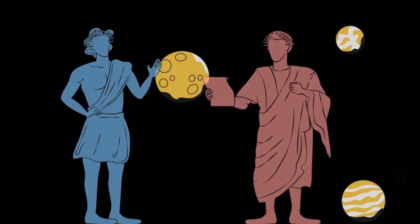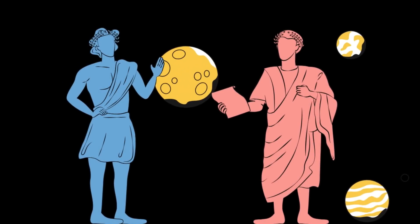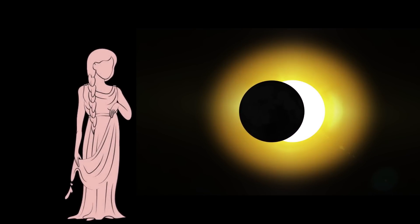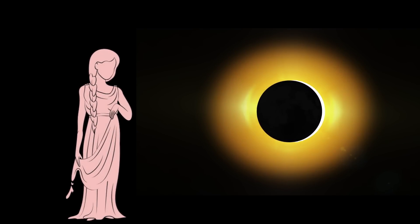Meanwhile, the Greeks began to question the myths surrounding the world. They began to propose that the Earth was spherical, based on observations like the shape of the Earth's shadow on the moon during eclipses. Astronomy was just beginning to take shape.